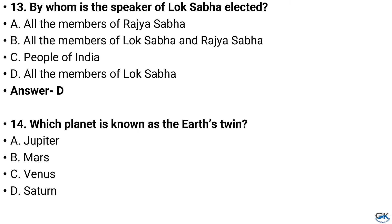Question number 14. Which planet is known as Earth's twin? Option A: Jupiter, Option B: Mars, Option C: Venus, Option D: Saturn. And the answer is Option C: Venus.